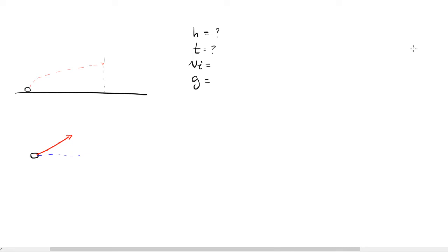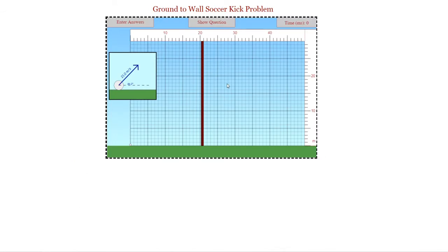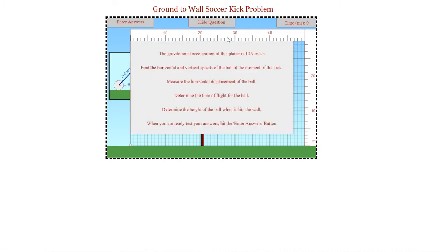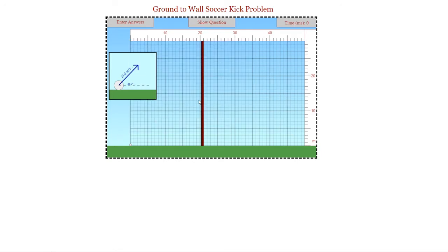Hey there fellow physics students. Today we're going to be working on the ground-to-wall soccer kick problem through the Physics Aviary website. In this problem we're given a couple values and we're trying to find the time that it takes for the ball to go into transit and hit the wall, as well as how high the ball is when it does hit the wall.